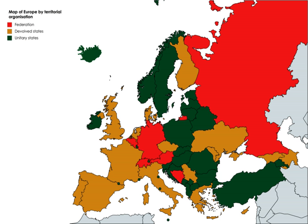The Union List includes subjects of national importance such as defense of the country, foreign affairs, banking, communications and currency; the union government alone can make laws relating to these subjects. The State List contains subjects of state and local importance such as police, trade, commerce, agriculture and irrigation; state governments alone can make laws relating to these subjects. The Concurrent List includes subjects of common interest to both union and state governments, such as education, forest, trade unions, marriage, adoption and succession. If their laws conflict, the law made by the union government will prevail.